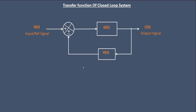This is the basic block diagram of a closed loop system. We have mainly two blocks: G(s) and H(s). G(s) is called the forward gain block, and H(s) is called the feedback block or feedback part. We also have a summing point, which acts as a comparator or adder. The input signal is the reference signal R, and the output signal is C.